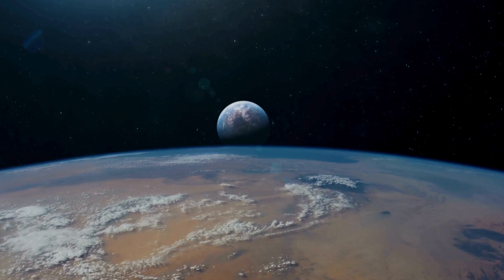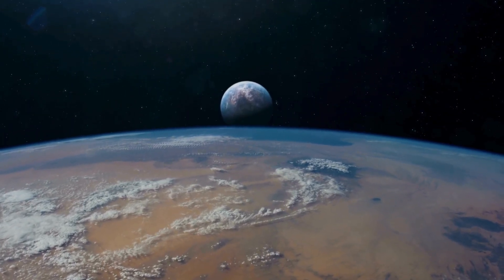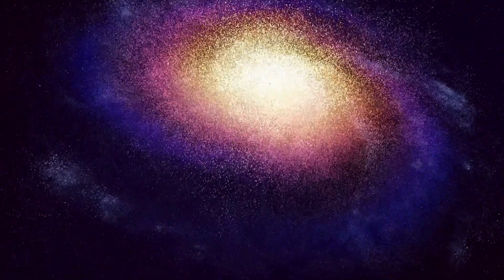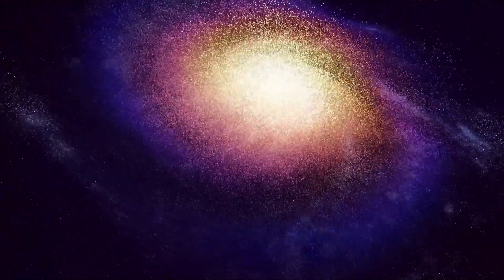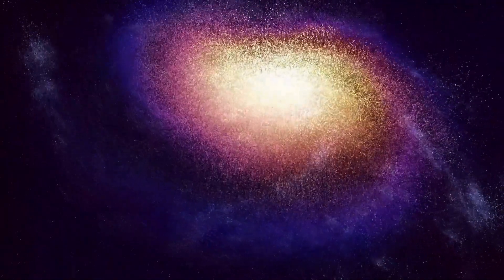The two stars, Rigel Centauris and Centauri B, form the binary known as Alpha Centauri AB. These G and K type stars appear as one star in the constellation of Centaurus, and they're the third brightest stars in our night sky with a peak amplitude of minus 0.27.